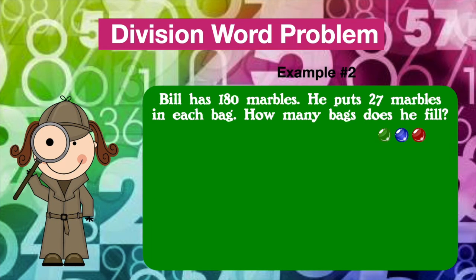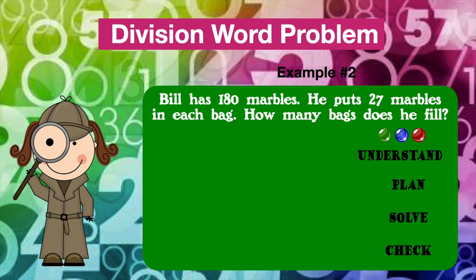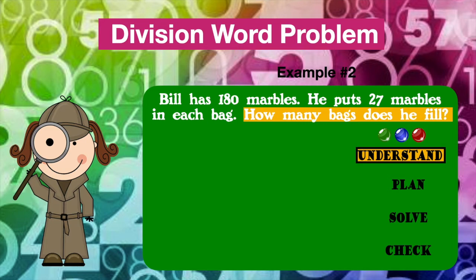Let's look at another word problem. We are going to use the UPSC method again: Understand, Plan, Solve, and Check. When we understand, we read the problem, identify the question, and circle what we know. Read the problem with me. Bill has 180 marbles. He puts 27 marbles in each bag. How many bags does he fill? They want us to figure out how many bags he fills. We know there are 180 marbles altogether and 27 marbles are in each bag.